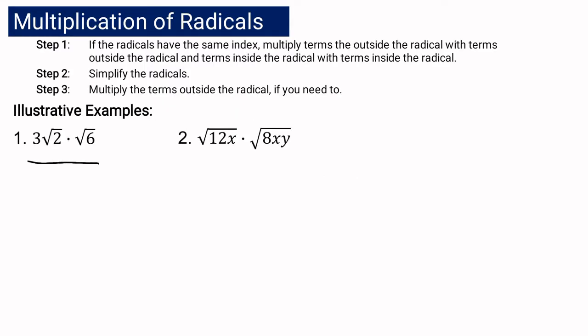For example number one, we have 3 square root of 2 multiplied by square root of 6. You multiply terms outside the radical to outside the radical, and inside to inside. So we have 3 as the numerical coefficient, and the second term has a coefficient of 1. You multiply 3 times 1 outside, and inside the radical, you multiply the radicand 2 by the radicand 6. So we get 3 square root of 12, and of course you need to simplify the radical if necessary.